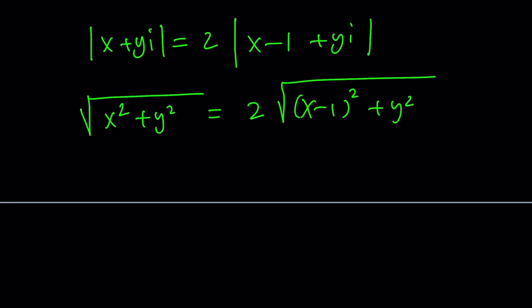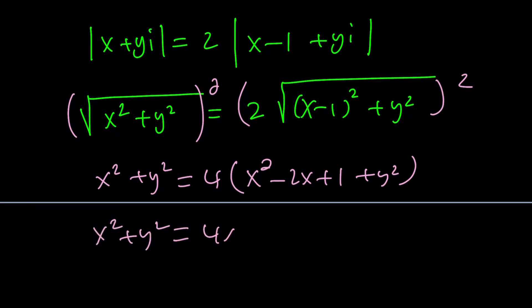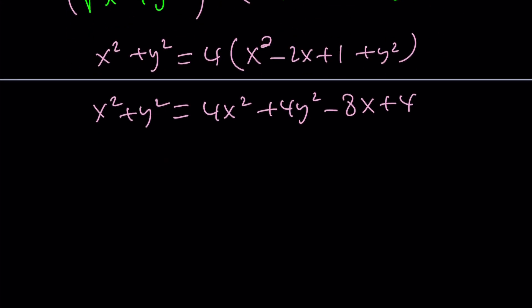Now, let's square both sides. And then, we get x squared plus y squared equals four times. Let me expand this. x squared minus 2x plus 1 plus y squared. Let me distribute it. 4x squared, and then I want to write the 4y squared, and then minus 8x plus 4. And now, let's go ahead and put everything on the same side. Subtract x squared, subtract y squared. You get 3x squared plus 3y squared minus 8x plus 4 equals 0.